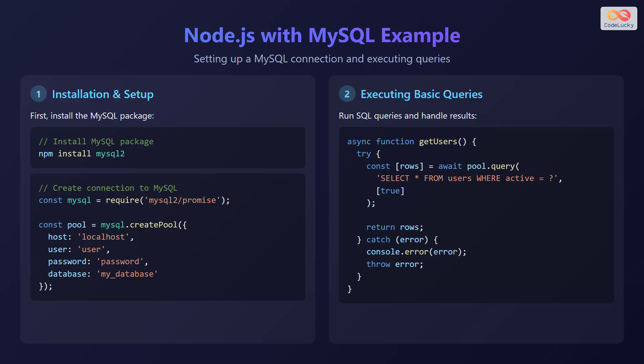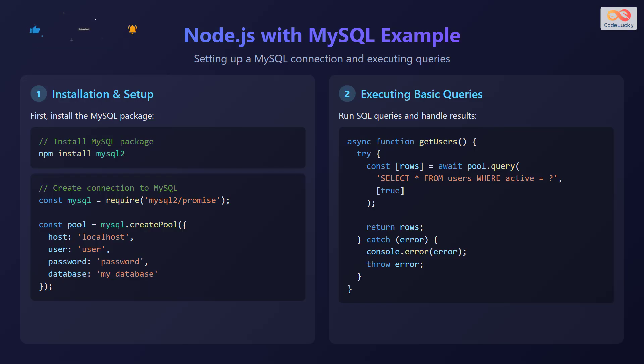Here's an example of Node.js with MySQL. We will set up a MySQL connection and execute queries. Step 1: Installation and Setup. First, install the MySQL package: npm install mysql2. Next, create a connection to MySQL. Declare a constant mysql and assign it to require('mysql2/promise'). Declare a constant pool and assign it to mysql.createPool, passing an object with host localhost, user, password, and database myDatabase.